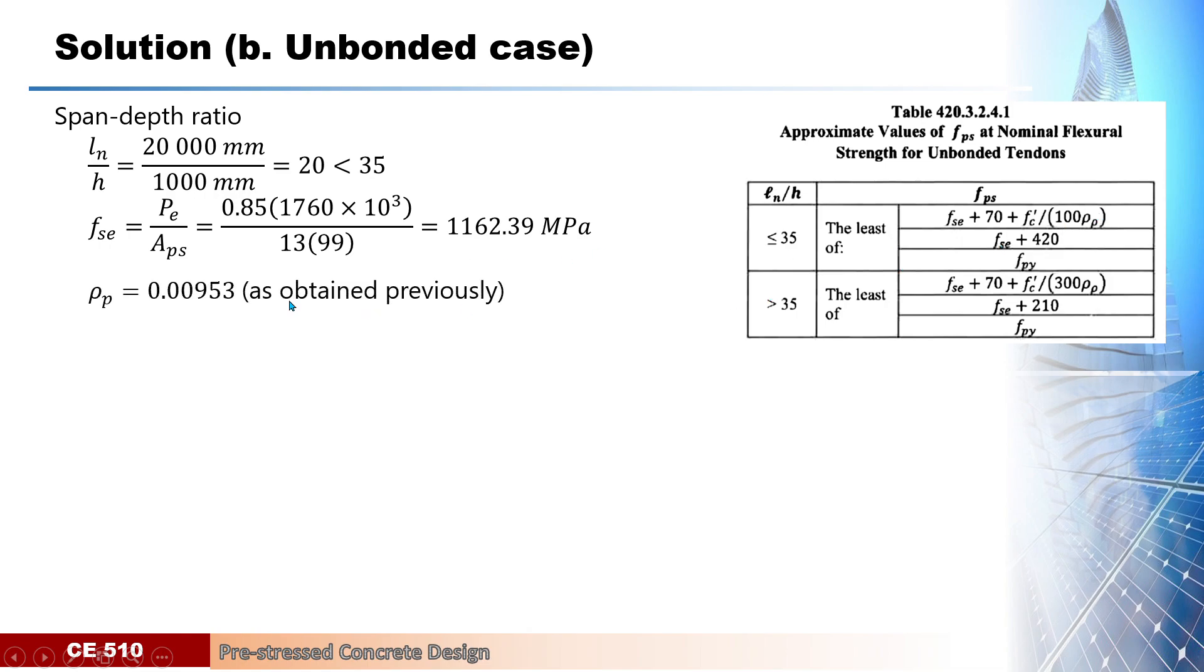Substituting values, we got the value to be 1162 megapascals. Also, the ρp which was already determined from letter A of the solution is 0.00953, assuming that this will be a flange section. Knowing these values, we can now say that FPS will be determined as the least of these three values. The first value, substituting 1162 megapascal and ρp, we got 1269 megapascal.